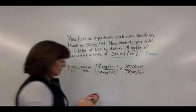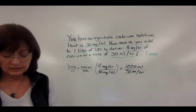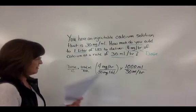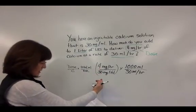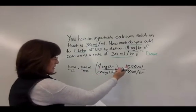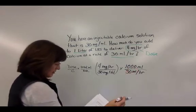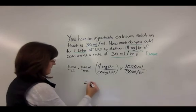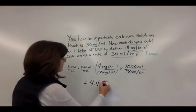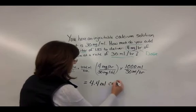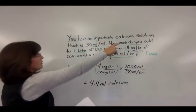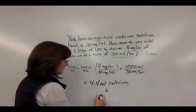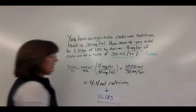So we have 4 mg/hour divided by 30 mg/mL, times 1,000 mLs total volume divided by 30 mLs per hour as the fluid rate. This comes out to 4.4 mLs of the calcium solution that you're going to add to your one-liter fluid bag.